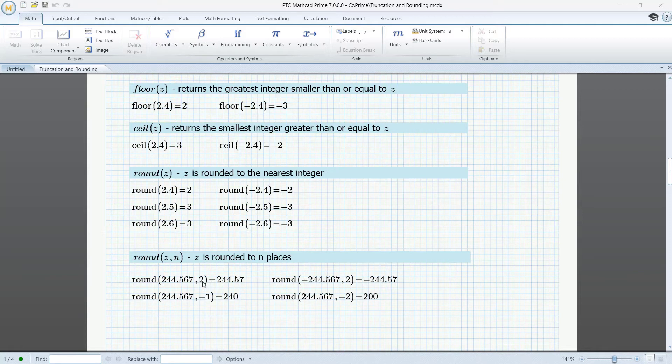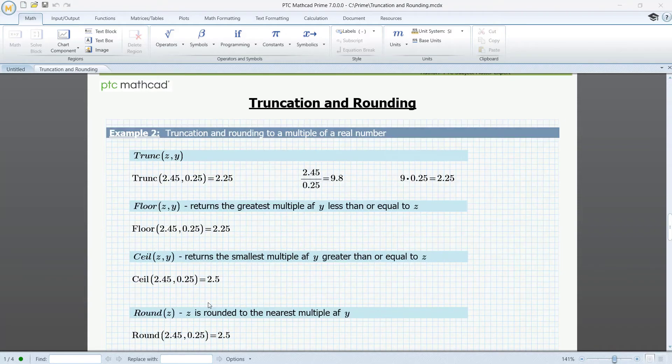Here the parameter 2 rounds to the nearest hundred. Minus 1 rounds to the nearest ten. And minus 2 rounds to the nearest hundred.